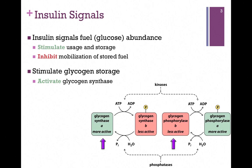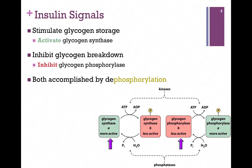So we want to stimulate glycogen storage, and therefore we're going to activate the enzyme that catalyzes glycogen storage — glycogen synthase. At the same time, we want to inhibit glycogen breakdown, and therefore we want to inhibit the enzyme glycogen phosphorylase. The interesting thing is we'll accomplish both purposes in one step: we'll use a phosphatase that will dephosphorylate these enzymes, and that's part of our illustration here.